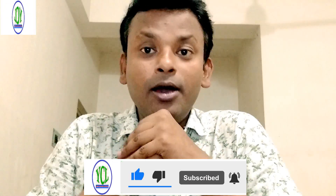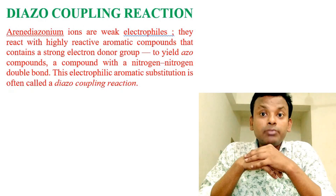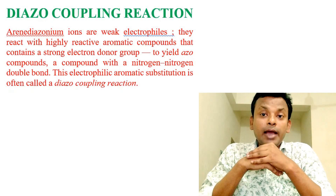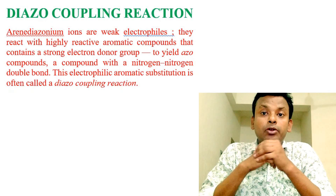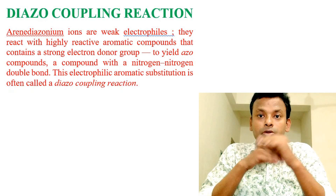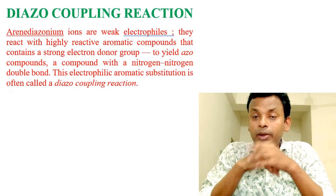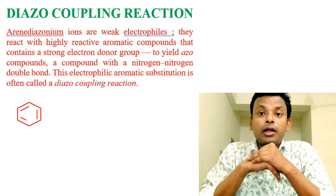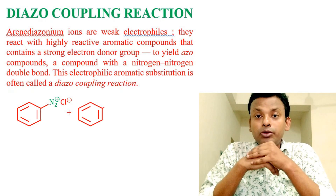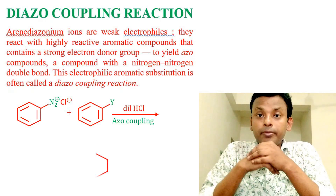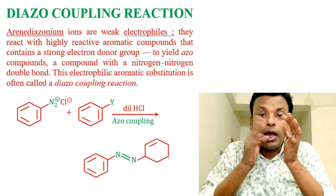Now watching the whiteboard: diazo coupling reaction. Diazonium ions, that is diazonium salts, are quick electrophiles. They react with highly reactive aromatic compounds that contain strong electron donor groups to yield azo compounds — compounds with a nitrogen-nitrogen double bond. This electrophilic aromatic substitution is often called the diazo coupling reaction. Here, diazonium chloride reacts with another aromatic compound where Y equals a strong electron donor group, forming an azo compound.